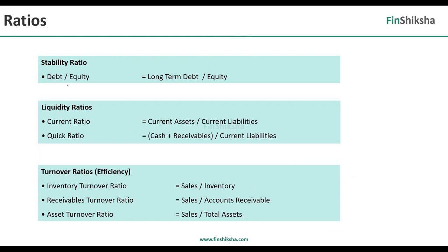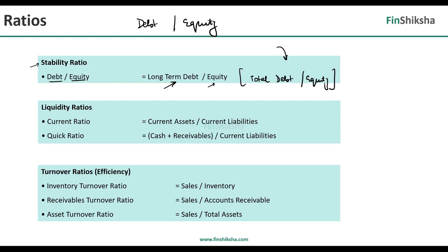The stability ratio, commonly referred to as debt-to-equity, reflects a company's capital structure. A company can raise capital through either debt or equity, and you want to see a healthy proportion of both. Some textbooks define this as long-term debt by equity, others as total debt by equity. Both definitions are available, but personally total debt by equity is a broader, more encompassing ratio.